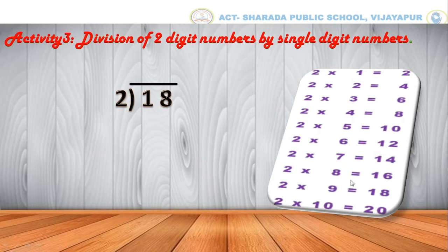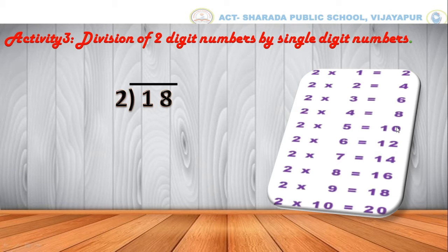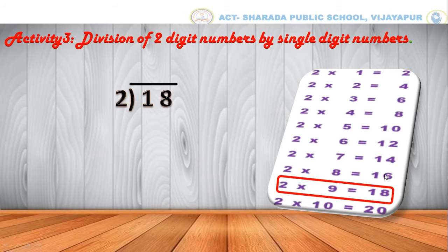Yes, 18 is there. Now we have to count the table: 2 1s are 2, 2 2s are 4, 2 3s are 6, 2 4s are 8, 2 5s are 10, 2 6s are 12, 2 7s are 14, 2 8s are 16, 2 9s are 18.